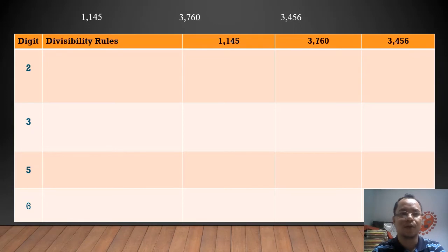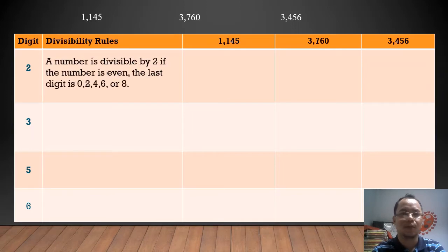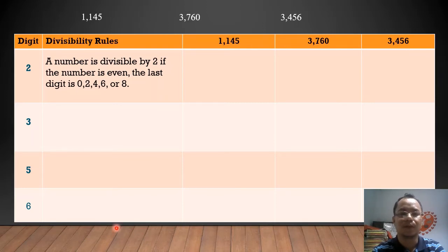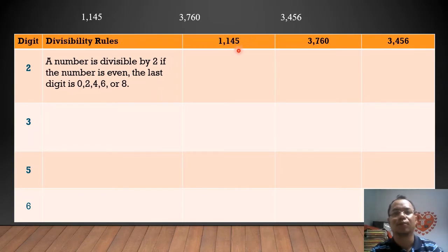So how can we identify if a number is divisible by 2? A number is divisible by 2 if the number is an even number, or the last digit is 0, 2, 4, 6, or 8. For example, 1,145 — the last digit here is 5, and that is not an even number. Therefore, 1,145 is not divisible by 2.